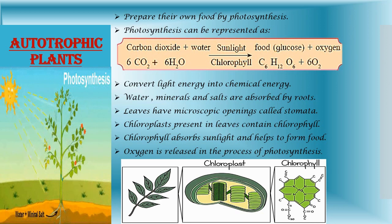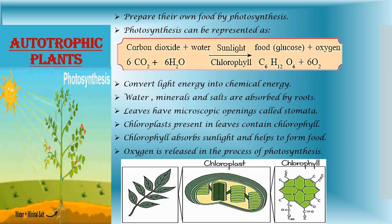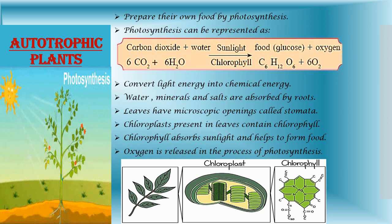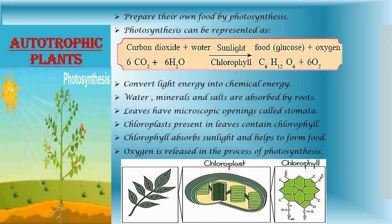Plants also convert light energy into chemical energy and store it in the form of food. Water, minerals and salts are absorbed by the roots from the soil and transported to the leaves by the stem. The leaves have microscopic openings called stomata through which carbon dioxide from the air enters the leaf.